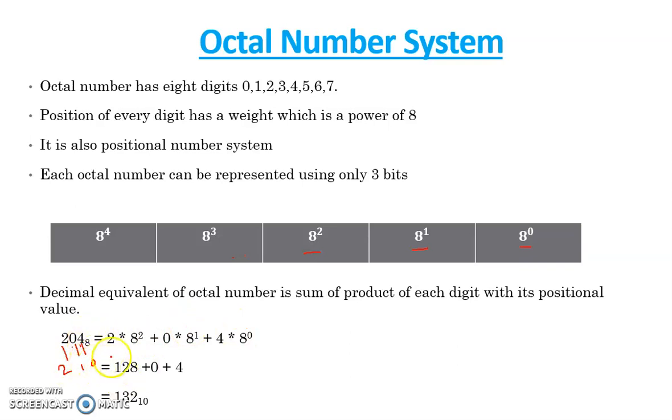So in this way I will calculate it and now I get 132 to the base of 10. This is a decimal number. This is how we can convert octal number into a decimal number.